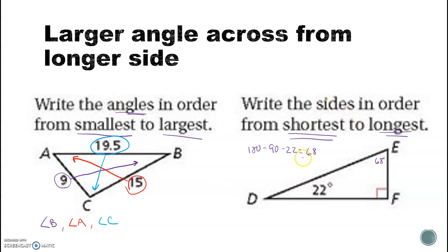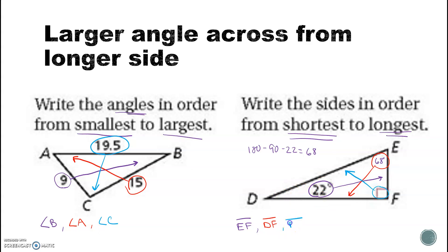Order sides from shortest to longest: the smallest angle is 22 degrees, so across from it is the shortest side, EF. Next is 68 degrees, across from it is side DF. The largest is 90 degrees — in a right triangle the hypotenuse is always the longest side — and that is side DE. Just pay attention to whether they ask for longest to shortest or shortest to longest.